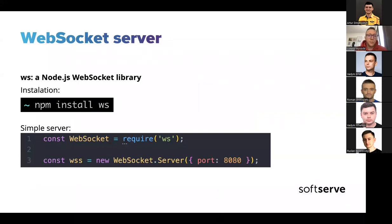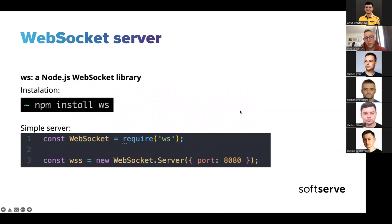Let's go to the implementation of WebSocket. For this example I used a Node.js library called WS. The simple configuration is really easy because, as you can see, it's only two lines. We need to use the server method from WebSocket, and in my basic configuration I just put port 8080 to run the server. And for now, that's it.